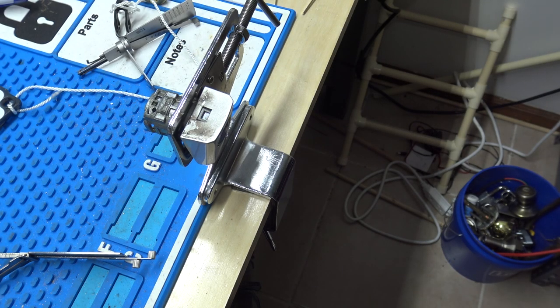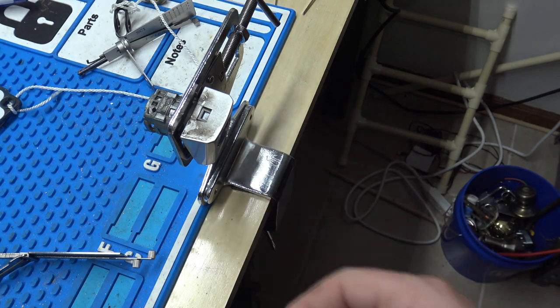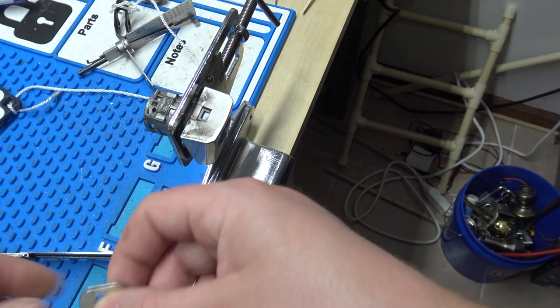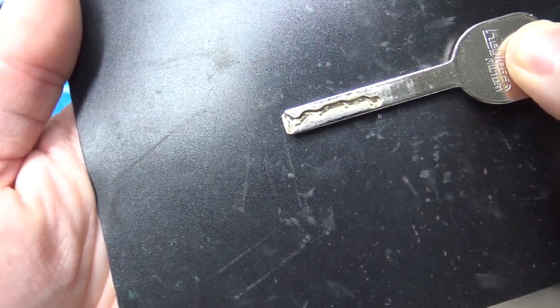Hey everybody, I'm going to do a quick video here on the HU100 8-cut. This is a Chevrolet lock, I don't remember what car, but it's an 8-cut HU100. I already made a key to it, and the purpose of this video is I want to show you some tips.